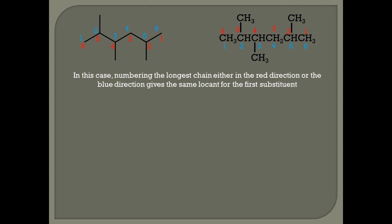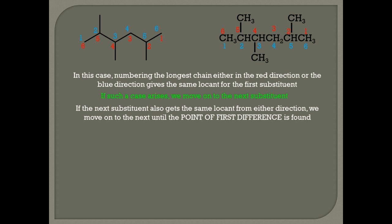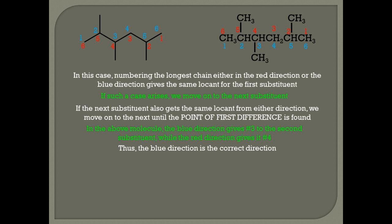Rule eleven. Consider the following molecule where numbering the longest chain in either the red direction or the blue direction gives the same locant for the first substituent — both are number 2. If such a case arises, we move to the next substituent. If the next substituent also gets the same locant from either direction, we move on until the first point of difference is found. In this molecule, the blue direction gives number 3 to the second substituent while the red direction gives it number 4. Thus, the blue direction is correct, giving the name 2,3,5-trimethylhexane and not 2,4,5-trimethylhexane as the red direction would give.